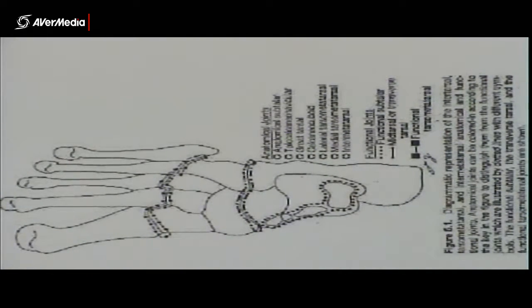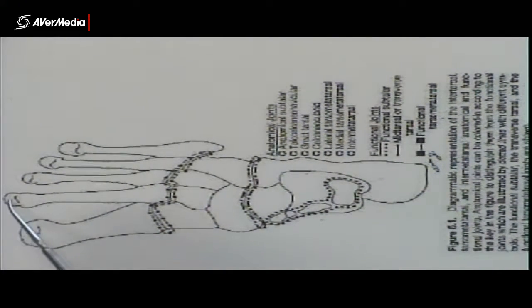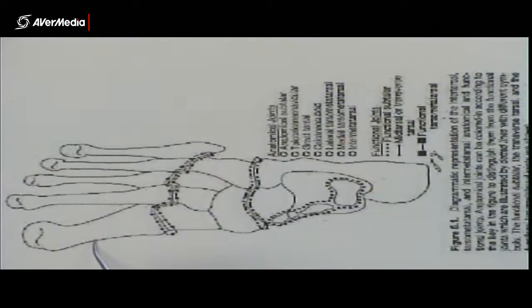Now we're looking at a sheet of a diagram of the joints of the foot. And what we can see is this foot doesn't have any phalanges. So these are the metatarsal heads up this end. So we've only made it as far as the metatarsals.